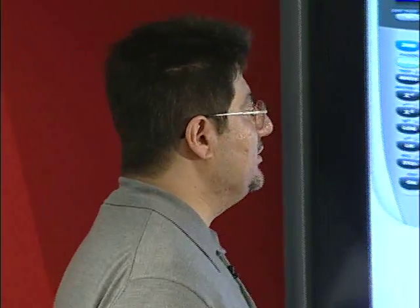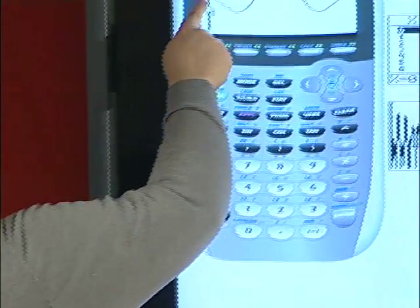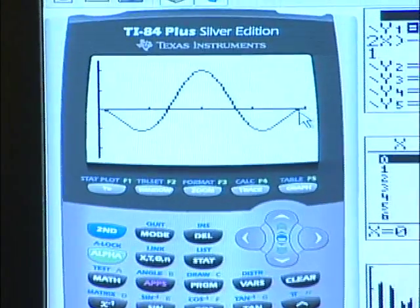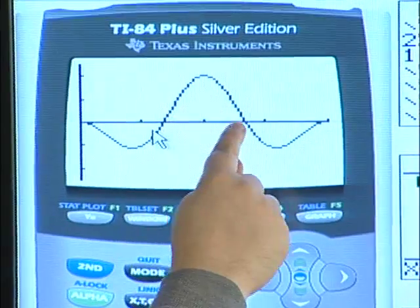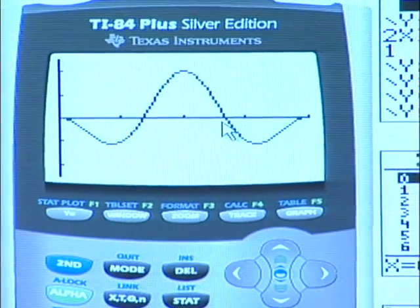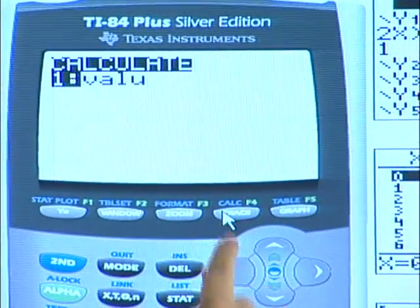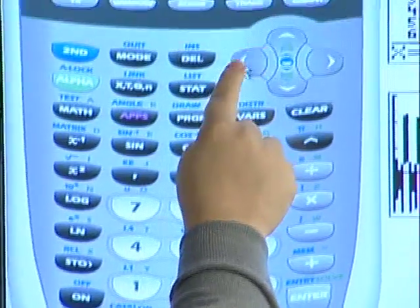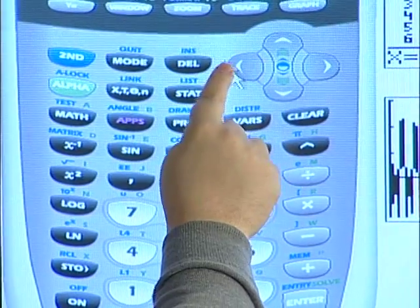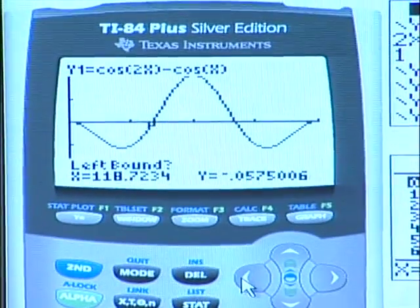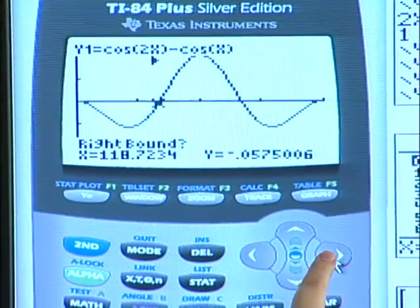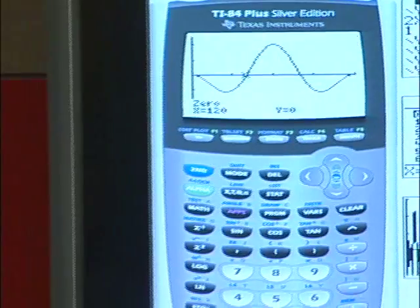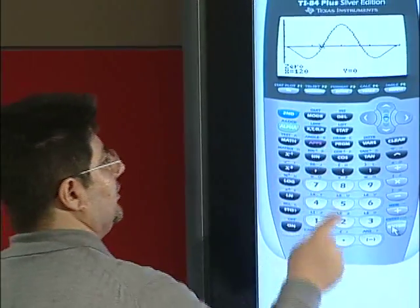Next we will find the x-intercepts. We know that this x-intercept is 0 and this x-intercept is 360. So we are left with finding these two x-intercepts. The first x-intercept is 120 degrees.